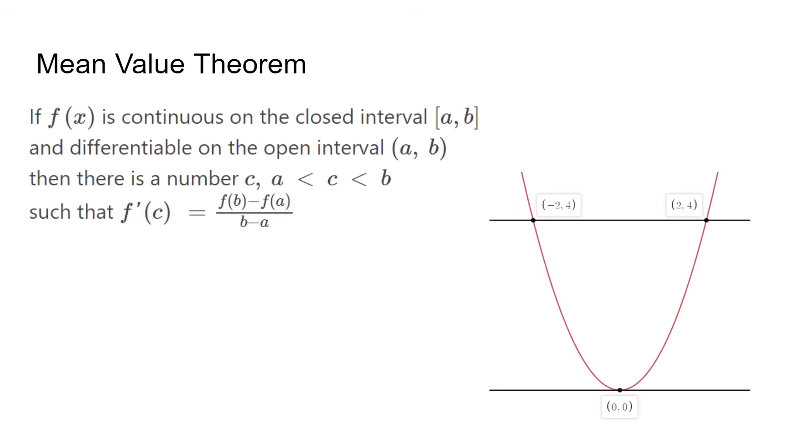The mean value theorem tells us that if a function is continuous and differentiable on an interval, there's a point c whose derivative equals the average rate of change. In this example with x squared, the average rate of change from negative 2 to 2 is 0, so the derivative of some point between must equal 0. In this case, it's at x equals 0.